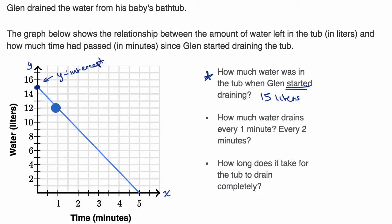So right over there, at time one minute, looks like there's 12 liters in it, in the tub. And then at time two minutes, there's nine liters. So it looks like as one minute passes, so we go plus one minute, plus one minute, what happens to the water in the tub?